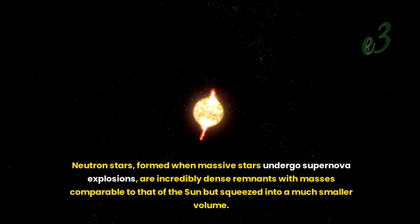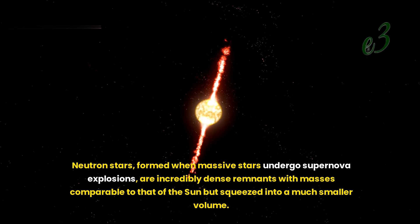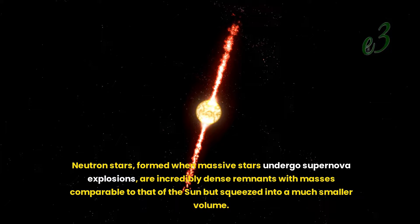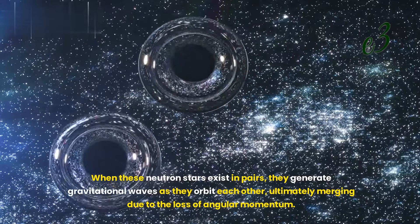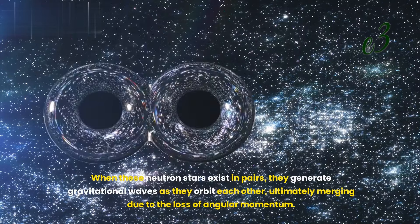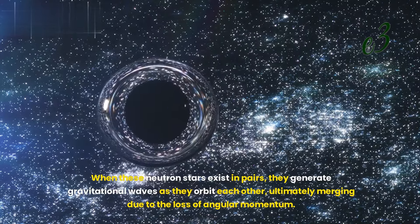Neutron stars, formed when massive stars undergo supernova explosions, are incredibly dense remnants with masses comparable to that of the Sun but squeezed into a much smaller volume. When these neutron stars exist in pairs, they generate gravitational waves as they orbit each other, ultimately merging due to the loss of angular momentum.